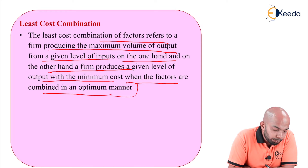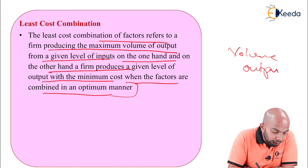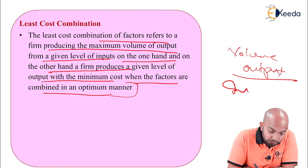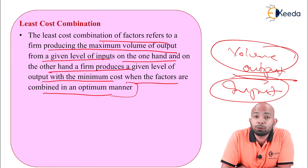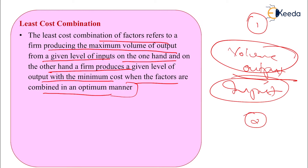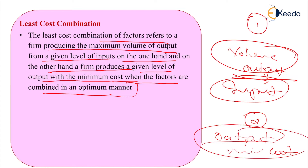There are two conditions here. The first refers to producing maximum volume of output with a given level of input. The second scenario speaks about the firm achieving a given level of output at minimum cost. So the first condition is output maximization at given input, and the second is cost minimization for a designated output level.